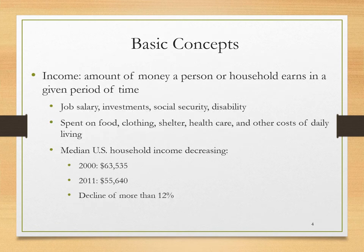Income is the amount of money a person or household earns in a given period of time. This can include job salary, investments, things like social security, or disability income. Income is typically spent on food, clothing, shelter, health care, and other costs of daily living, especially when we're talking about people who are middle class, working class, and poor.